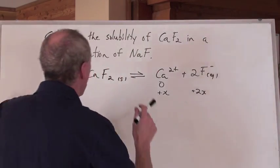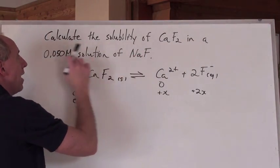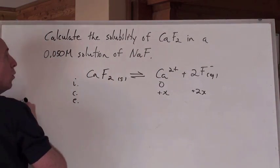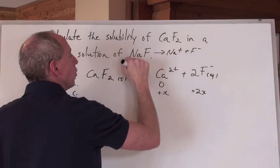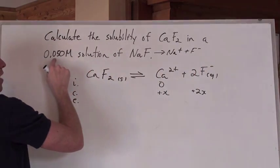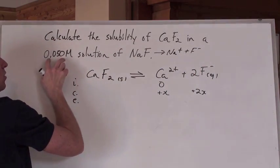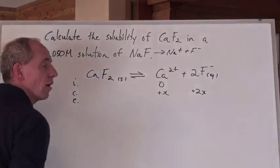But it's in a solution where there's already some sodium fluoride, at this concentration. Which means, by the way, that when this breaks down into solution to form Na positive and F negative, it's a 1 to 1 ratio. If that's the concentration of that, that's also the concentration of the F negative ion.